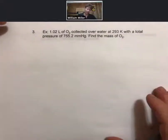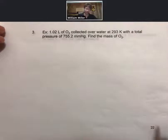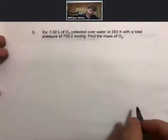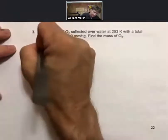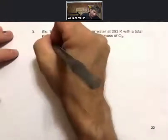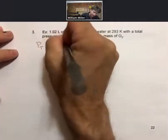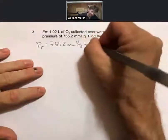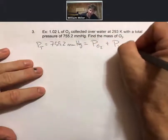Let's see what a problem like this looks like. 1.02 liters of oxygen collected over water at 293 Kelvin with a total pressure of 755.2 millimeters of mercury. Find the mass of oxygen. So the total pressure P_t equals 755.2 millimeters of mercury. The total pressure is going to be equal to the partial pressure of oxygen plus the partial pressure of the H2O.